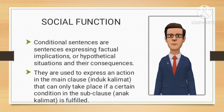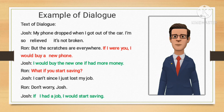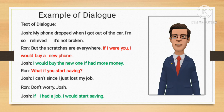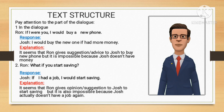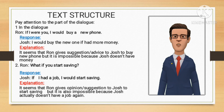In this slide you will be shown the text structure of conditional sentences, especially the application in dialogue. Pay attention to the dialogue below and let's analyze it together to find the structure of the text. In the dialogue, Ron says: 'If I were you, I would buy a new phone.' And Josh responds: 'I would buy the new one if I had more money.' From the dialogue, Ron gives a suggestion or advice to Josh to buy a new phone, but it is impossible because Josh doesn't have money.